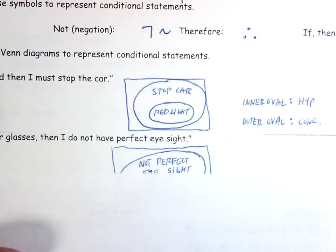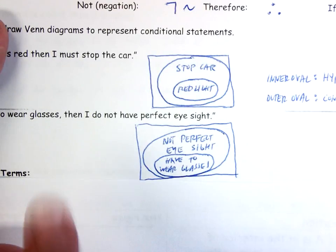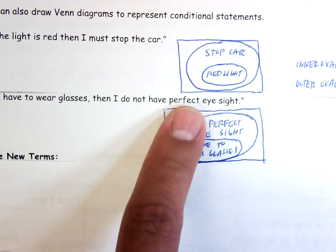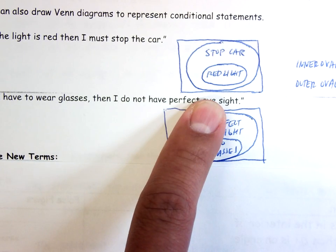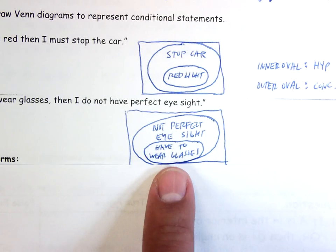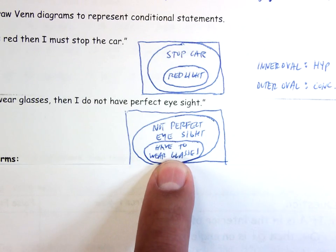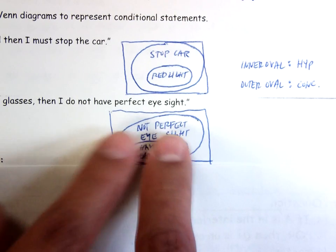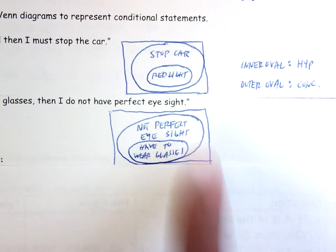Let's do another Venn diagram example: if I have to wear glasses, then I do not have perfect eyesight. The inner oval (hypothesis) is 'I have to wear glasses,' and the outer oval (conclusion) is 'I don't have perfect eyesight.'